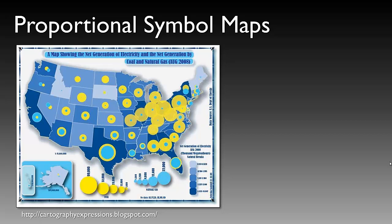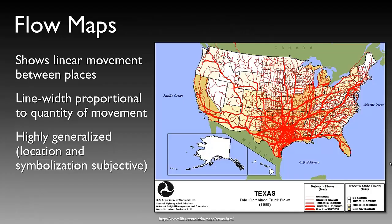Take a minute to look at this map to get a good feel for what the author is trying to display. The next type of map is a flow map. Flow maps show linear movement between places, and line width is proportional to the quantity of movement. In the example on the right you can see total truck flows from various port cities in Texas, with the thickest lines on routes with the most flow, distributing across the lower 48 states and into Canada.